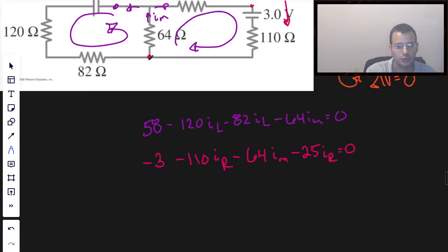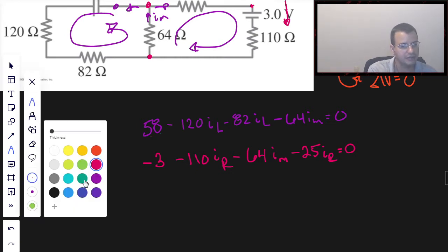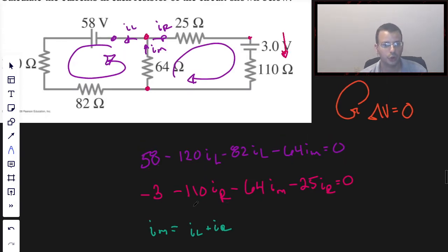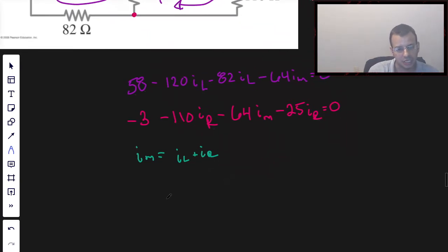And then we're going to use Kirchhoff's current law, which basically says that all the current going in equals all the current going out. We're going to have I middle equals I left plus I right, because we have I middle going in, I left and I right both going out. So I'm going to rewrite this in a way that's friendly to a matrix. So I'm going to do negative 120 plus 82, that's 202, so we're going to have 202 I left plus 64 I middle plus 0 I right equals 58.